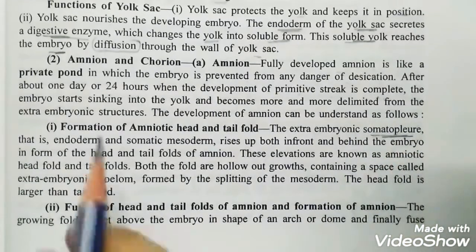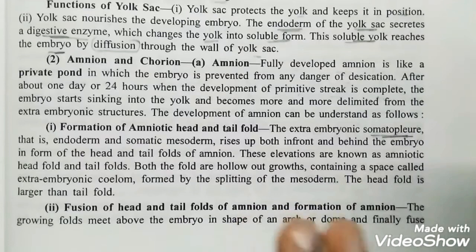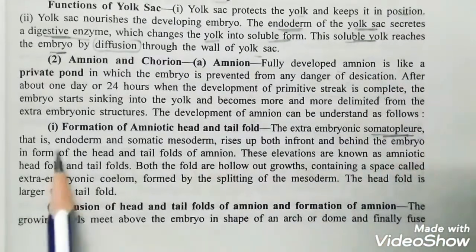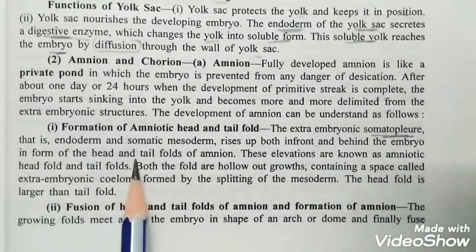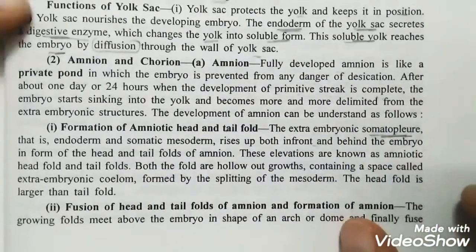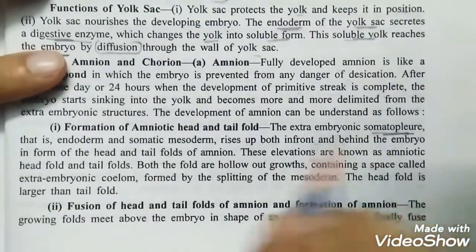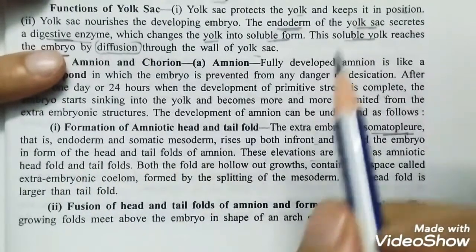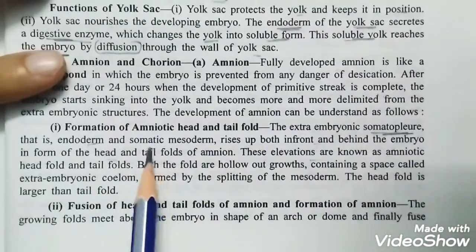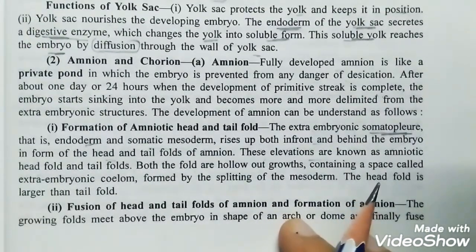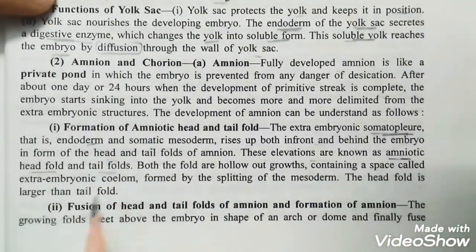Now we are studying somatopleur. The splanchnic layer of mesoderm is aligned with extra-embryonic endoderm. The somatopleur consists of ectoderm and somatic mesoderm, which rises both in front and behind the embryo in the form of the head and tail folds of amnion. These elevations are called amniotic head folds and tail folds.